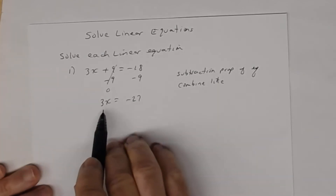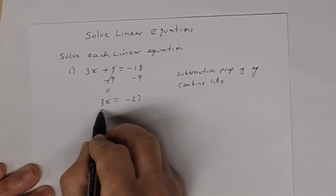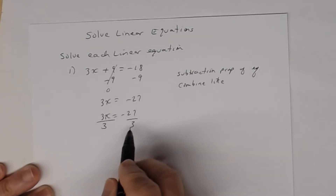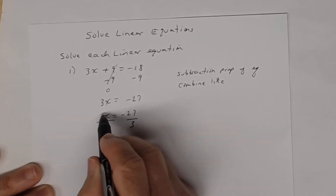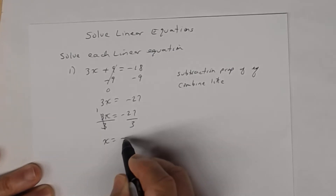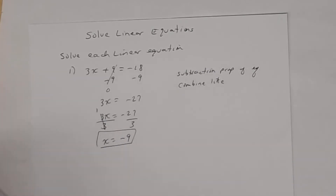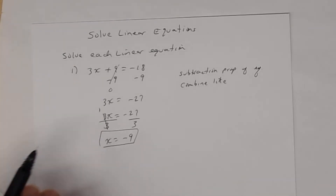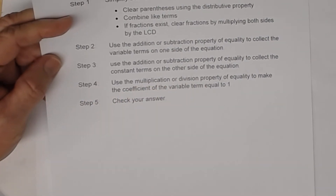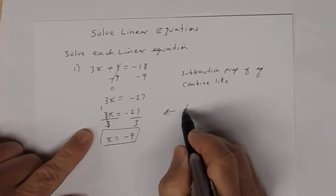Now for step four: right now x is being multiplied by 3, so the opposite is to divide by 3. Make sure you divide by just 3, not 3x — that would be mathematically incorrect. So 3 divided by 3 is 1, and 1 times x is x. Therefore x = -27 ÷ 3 = -9. That division step was step four — using the division property of equality to make the coefficient of the variable term equal to one.